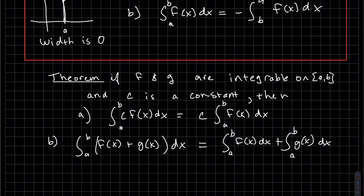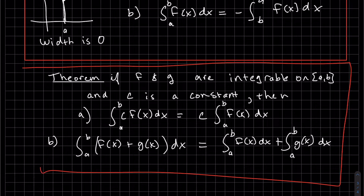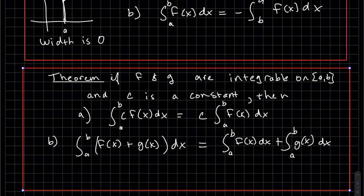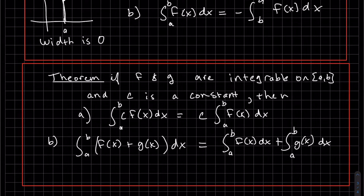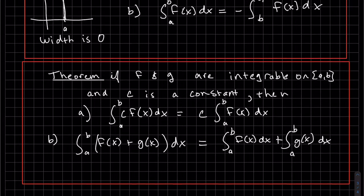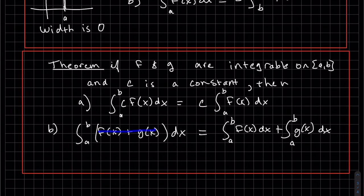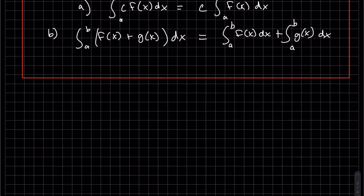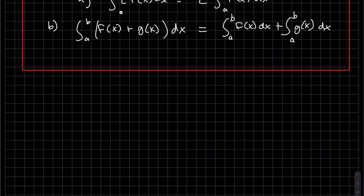These two theorems shouldn't come as too big of a surprise, because we had the same theorems for summations, and summations are integrals. If we have a constant, that constant could come in the front, just like with the summation. If we have a sum, we can break that sum up. We could distribute the integral, just like we could distribute the sum. In general, we did it as a specific example, but it's a theorem.